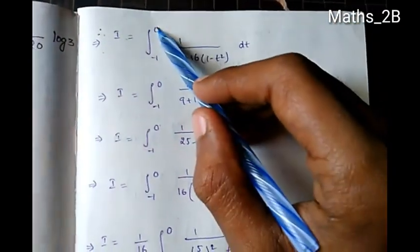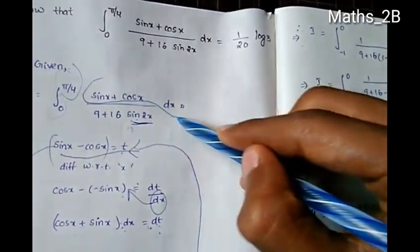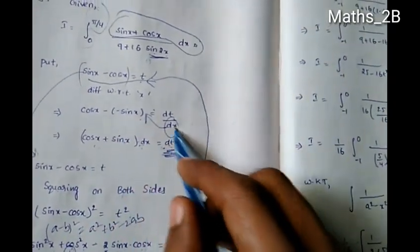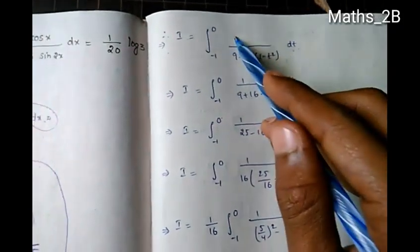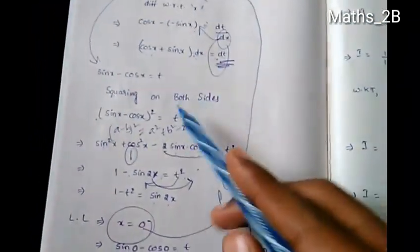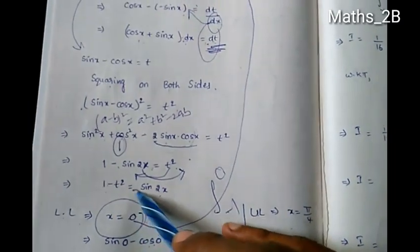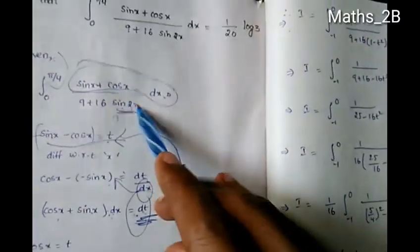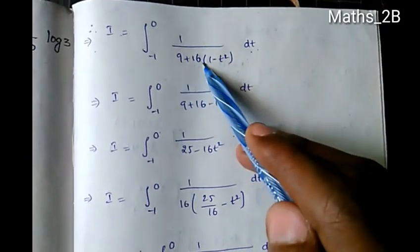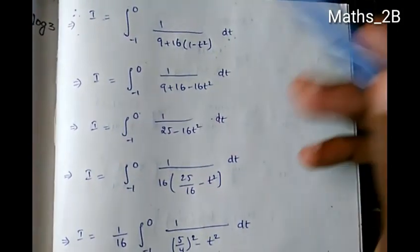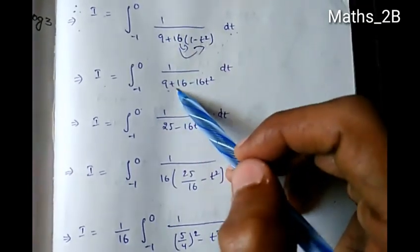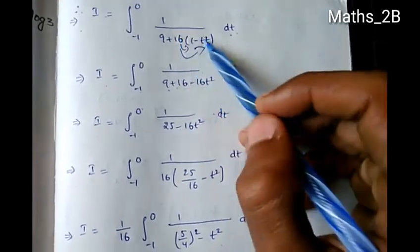Differentiating sin x - cos x = t gives cos x + sin x = dt/dx, so (sin x + cos x)·dx = dt. The integral becomes I = ∫₋₁⁰ 1/(9 + 16·(1 - t²)) dt, which simplifies to ∫₋₁⁰ 1/(9 + 16 - 16t²) dt = ∫₋₁⁰ 1/(25 - 16t²) dt.